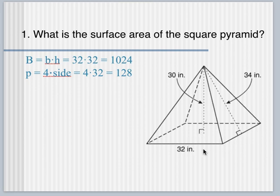Because a square is a type of rectangle, you just do base times height, 32 times 32, you get the area. Perimeter, all the sides would be 32, so 4 times 32 would get you the perimeter.